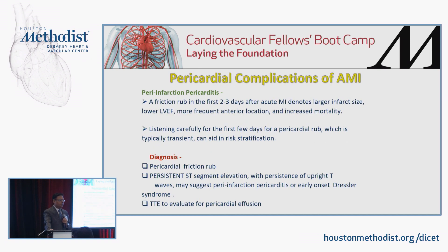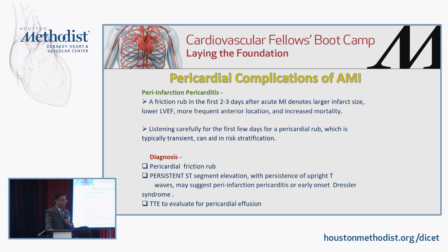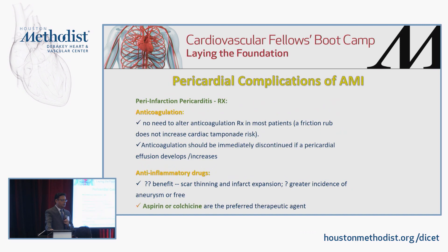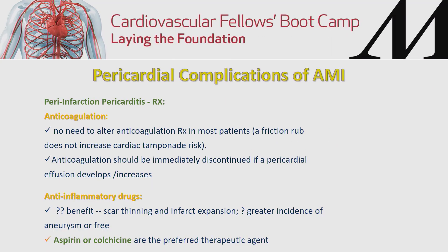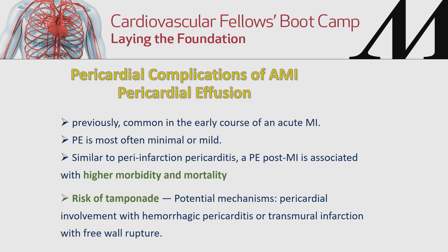Pericardial friction rub is generally seen in the first two to three days after acute MI, usually denoting a larger infarct size and more frequently in the anterior location. Diagnosis is initially clinical by auscultation; persistent ST elevation with upright T-wave suggests post-infarction pericarditis. Transthoracic echocardiogram is used to evaluate pericardial effusion. No need to change anticoagulation; NSAIDs are not used routinely — aspirin or colchicine are the preferred agents. Pericardial effusion is common early in acute MI and often minimal, though there is always a risk of tamponade.